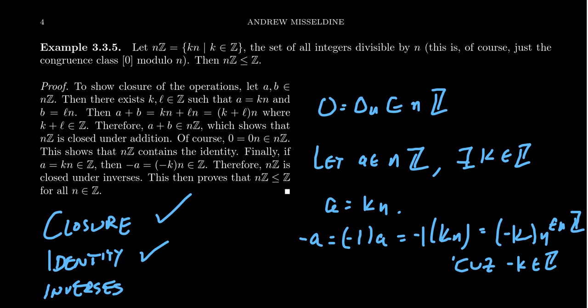This shows that the set NZ is closed under inverses. We've verified all three properties: the sum of two elements in NZ belongs to NZ, zero belongs to NZ, and given any element A in NZ, its inverse negative A is also in NZ. By the previous proposition, this shows that NZ is in fact a subgroup.